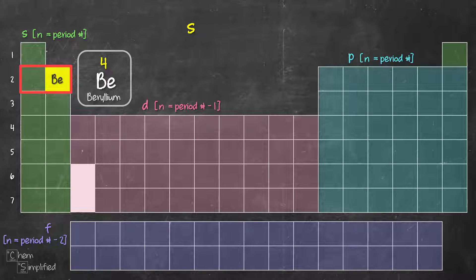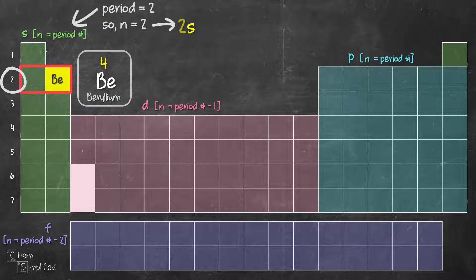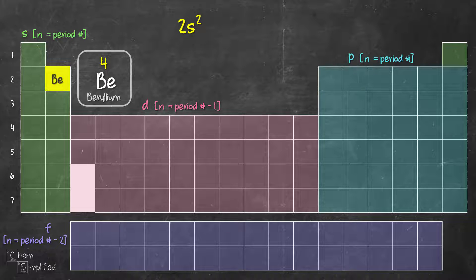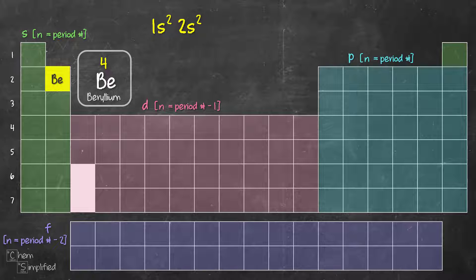Beryllium is located in period 2, which is row number 2. For S block, the energy level and the period number are the same. Since beryllium is in period 2, we write 2 in front of S. Beryllium is the second member in the S block, so we write a superscript 2 — giving us 2s2. Starting from period 1, there are 2 elements in the S block, so we write 1s2. With that, we're done writing the electron configuration for beryllium because it only has 4 electrons.